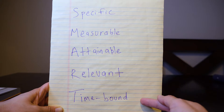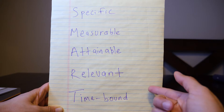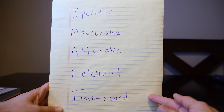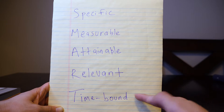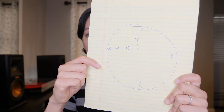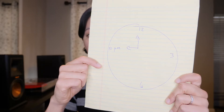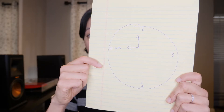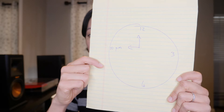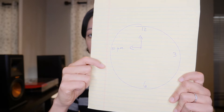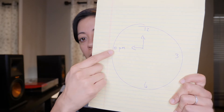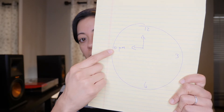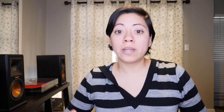T is for time-bound. What is the deadline? When do I need to start to accomplish this goal? Since this is a daily goal, I want to get all my footage filmed by the end of today. I usually go to bed around 10 PM, so I want to be done by 10 PM.